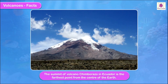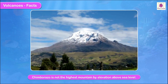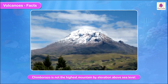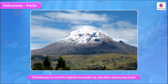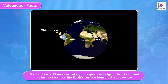The summit of volcano Chimborazo in Ecuador is the farthest point from the center of the earth. Chimborazo is not the highest mountain by elevation above sea level, but its location along the equatorial bulge makes its summit the farthest point on the earth's surface.